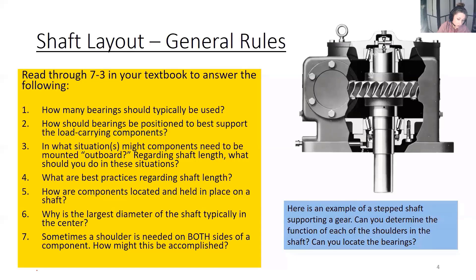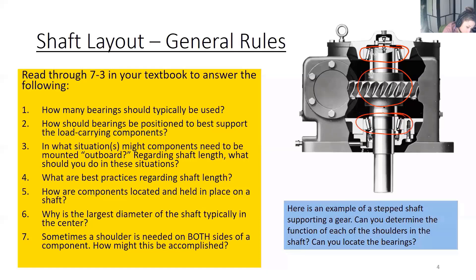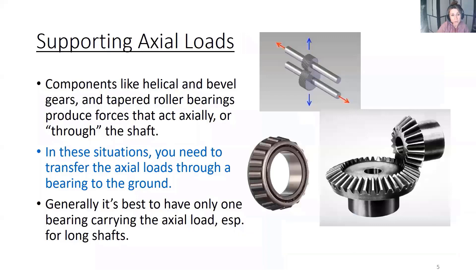The functions of the shoulders are to position the bearings and gear where they need to go — they help position everything on the shaft. In this case there are two tapered roller bearings, which are used because they can handle the thrust load produced by helical gears. Helical gears produce a thrust load or axial load in addition to the radial load due to their helix angle.